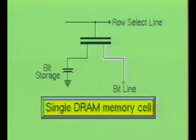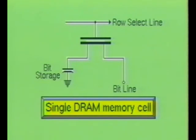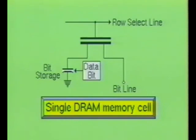To write data into the memory cell, the data bit is placed on the bit line, then the cell is selected through the row or word select line. The capacitor then charges through the MOS transistor to the bit line voltage level. When the row select line turns off the MOS transistor, the capacitor will retain its charge, thereby storing the data bit.